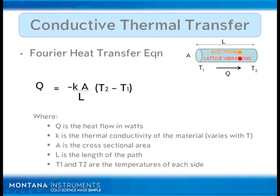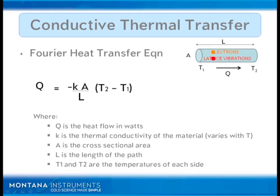So, conductive thermal transfer. There are two primary ways in which heat is transferred through a material: electron travel — you can see the two little representations of the electrons — and lattice vibrations, which is the second mode of heat transfer. For electrically conductive materials, heat transfer is primarily through electron travel. Lattice vibrations become more dominant in room-temperature materials and also in electrically insulating materials.